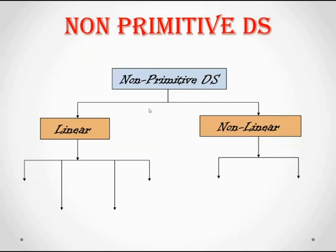When it comes to non-linear data structures, the elements are not stored sequentially. Instead, each element is connected with two or more items in a non-linear arrangement. Now we'll see the categories of both linear and non-linear data structures.